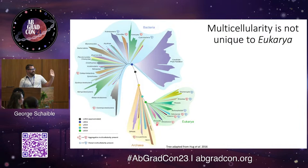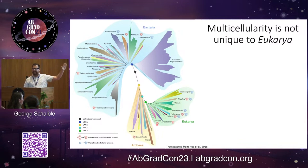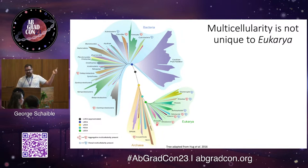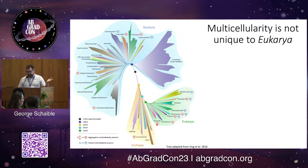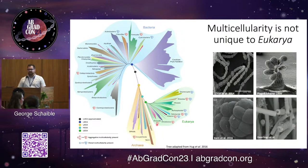If we look at the tree of life as we know it today, multicellularity can actually be plotted across the entire tree of life. What I'm showing here is the aggregative or clonal evolution of multicellularity, and we see it present in the bacteria, the archaea, and the eukarya of course.